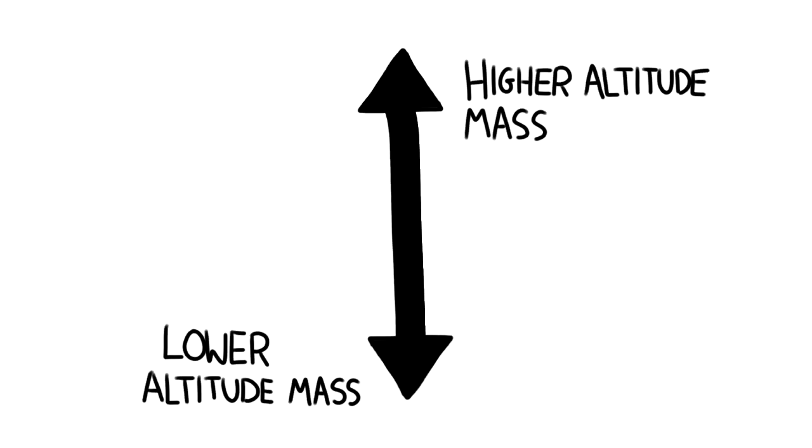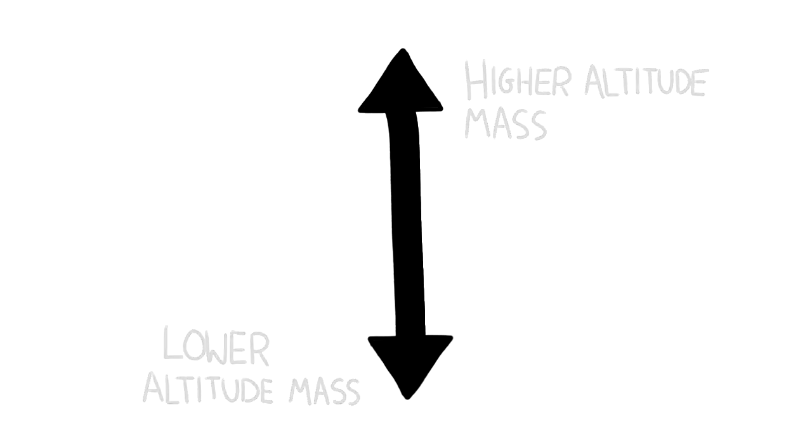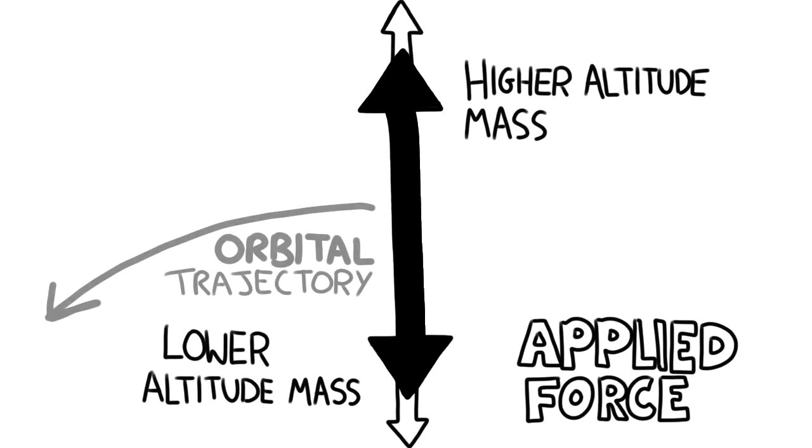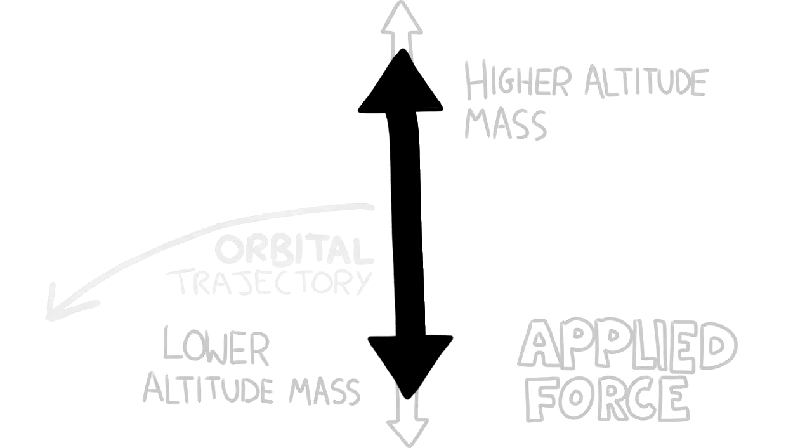If a spacecraft doesn't extend across a great enough distance, then the difference in altitude between our high and low masses becomes negligible, and the force of the masses trying to occupy different orbits becomes insufficient to stabilize the craft.